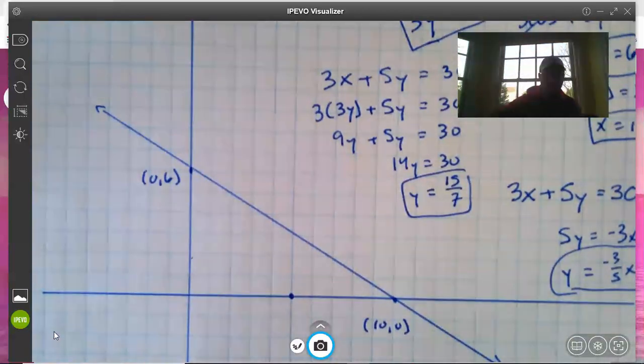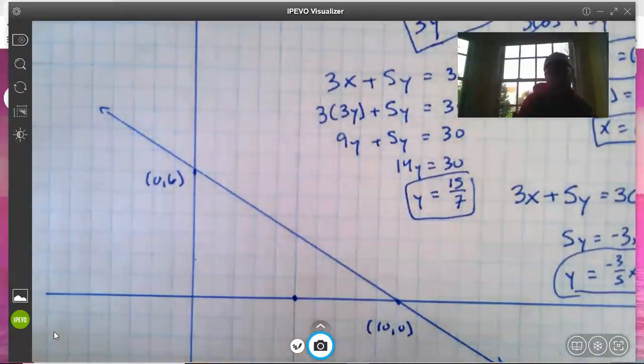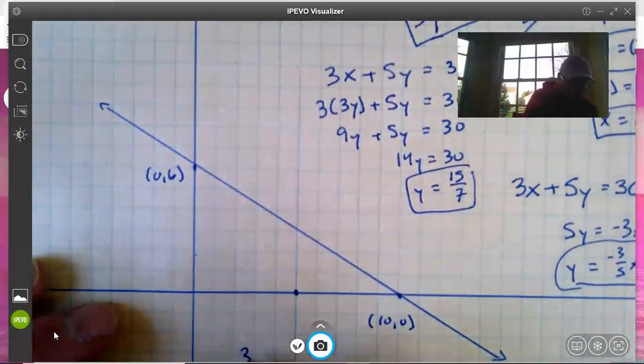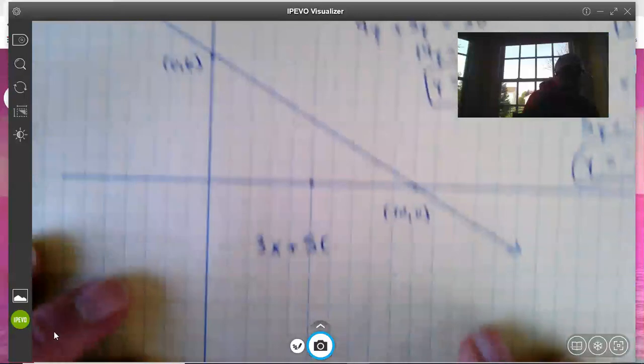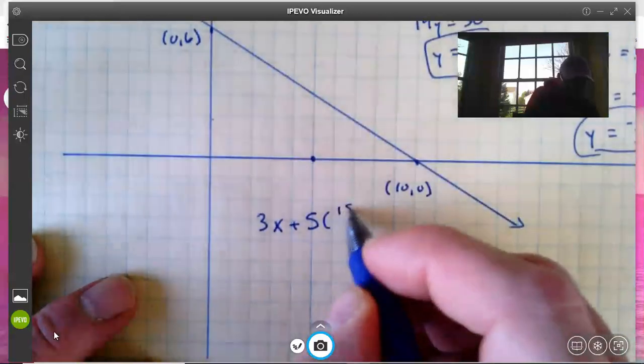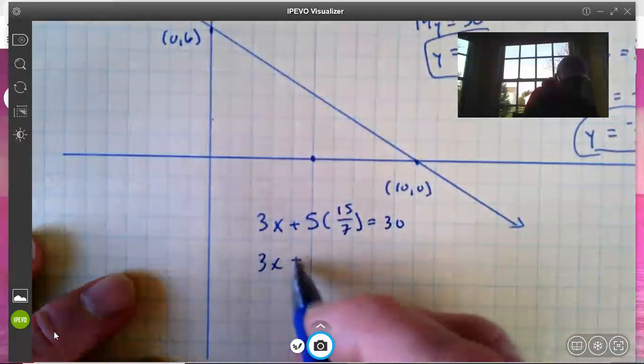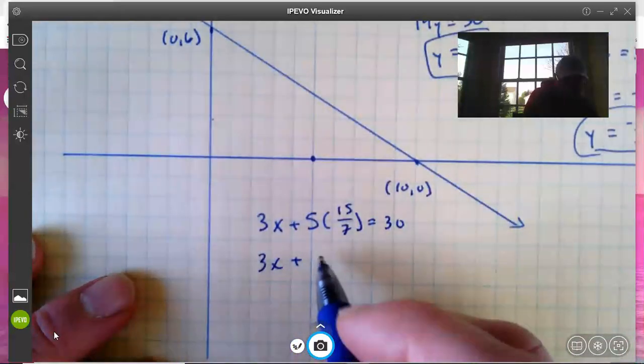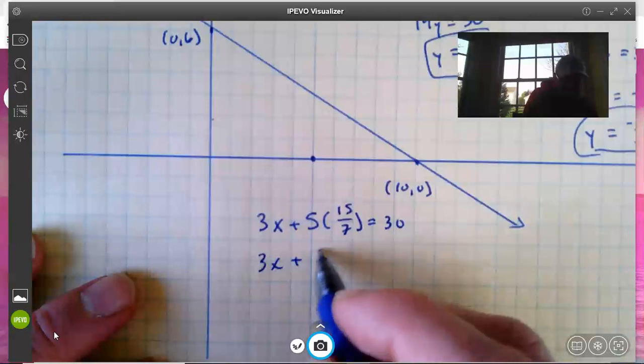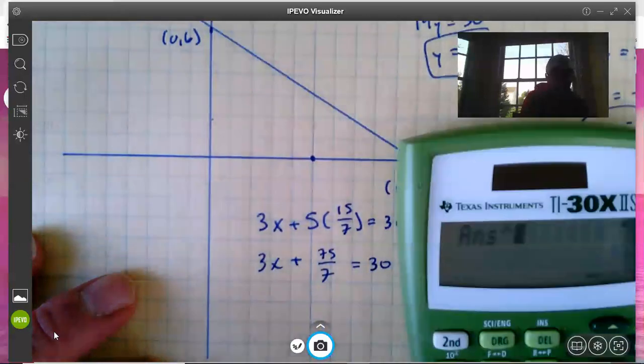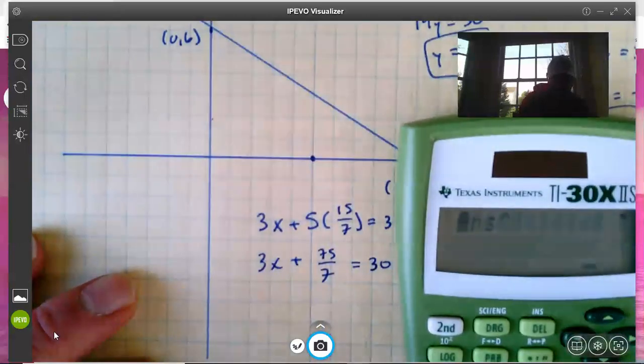We'll substitute 15/7 for y into our original equation and see what we get for x. So I'm going to go 3x + 5(15/7) = 30. So 3x plus—that would be 75/7—equals 30. Let's see, 30 minus 75/7...